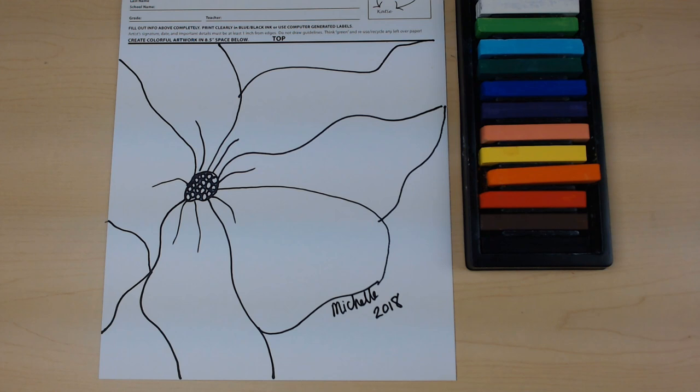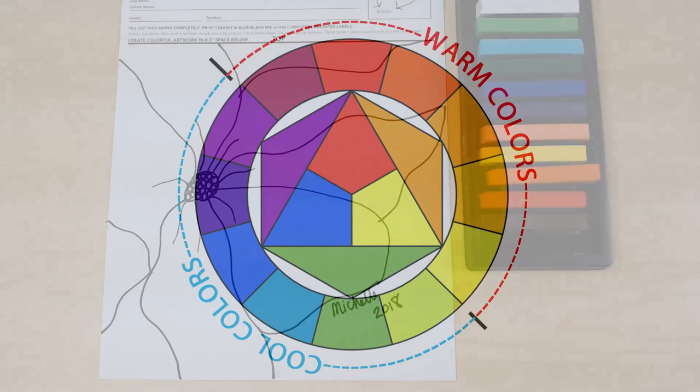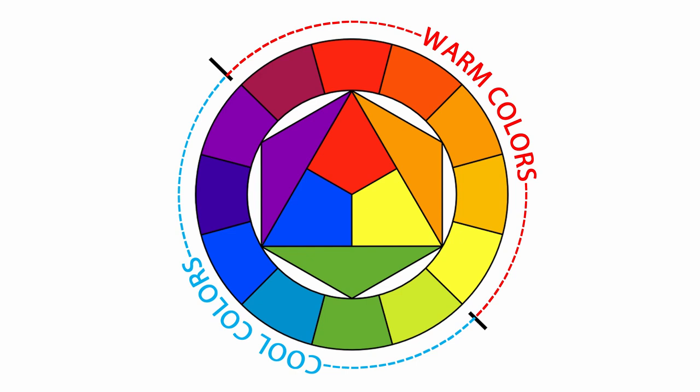Now we're going to add some color. When we're coloring with our pastels, we want to make sure that the petals stand out from the background. So I want you to use either your warm colors for your flower and then cool colors for your background, or cool colors for your flower and warm colors for your background. But I want you to use those combinations of warm and cool colors to make it stand out from the background.